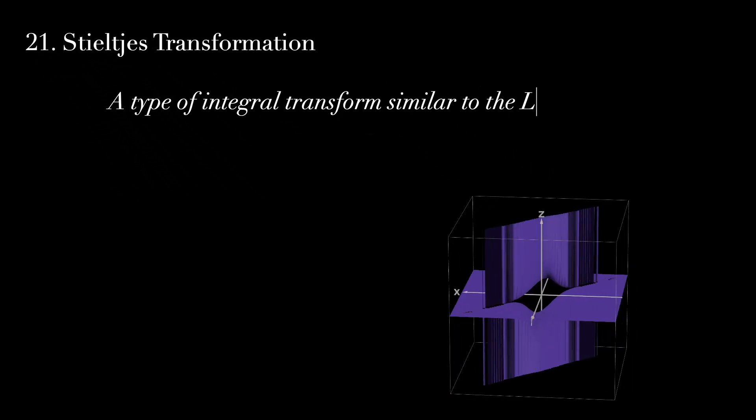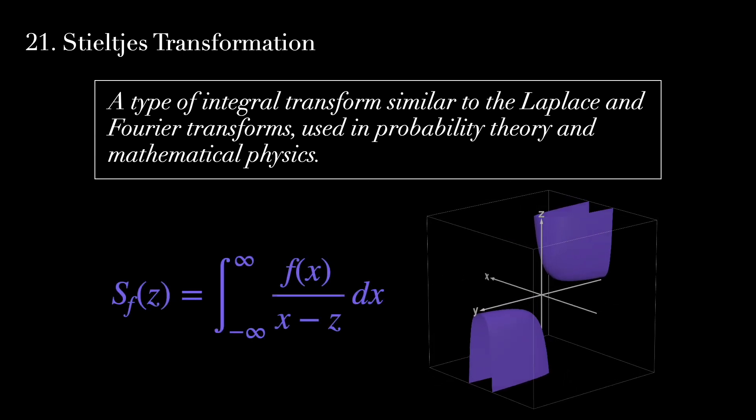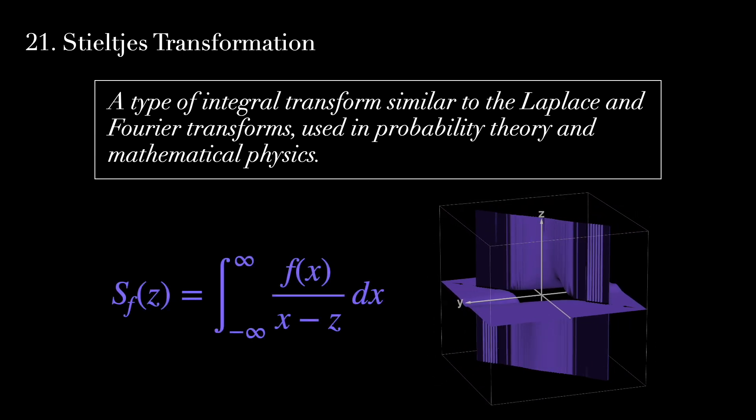21. Stieltjes transformation. A type of integral transform, similar to the Laplace and Fourier transforms, used in probability theory and mathematical physics.